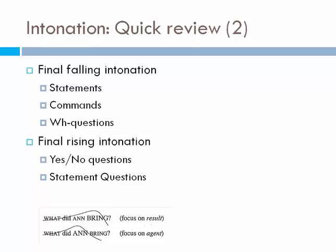Final intonation and prominence — depending on the word you emphasize, the meaning of the context is going to change. 'What did then bring?' — focus is on the result, somebody brought something. But if I say 'What did then bring?' with different emphasis, the focus is now on the agent. I want to know what that specific person brought.